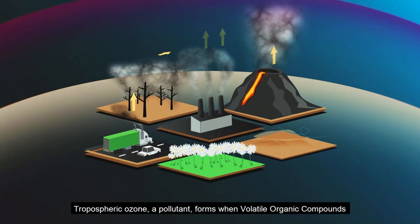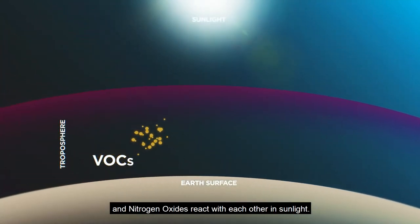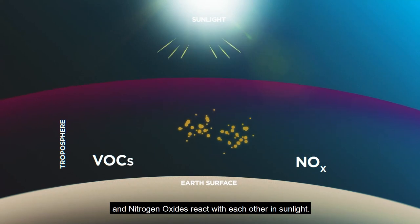Tropospheric ozone, a pollutant, forms when volatile organic compounds and nitrogen oxides react with each other in sunlight.